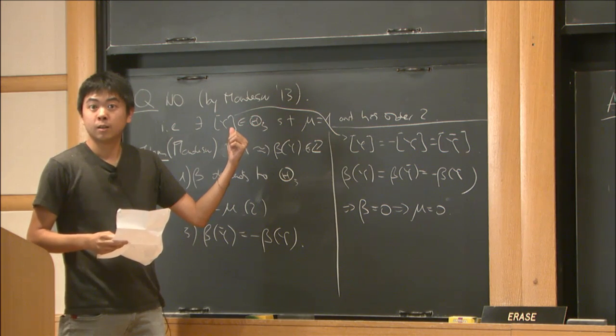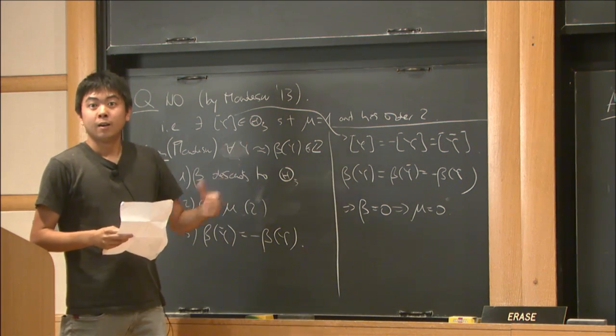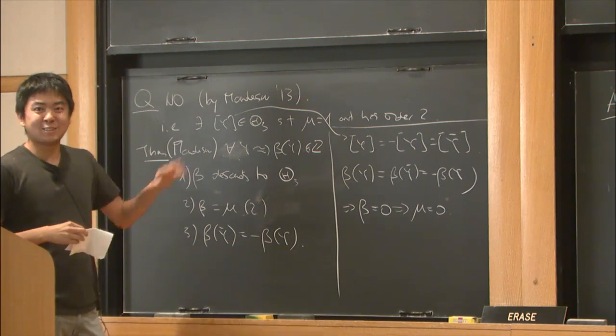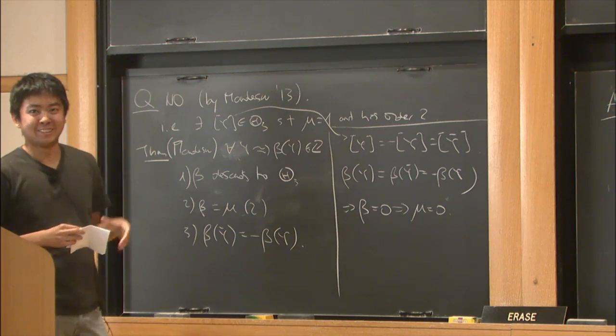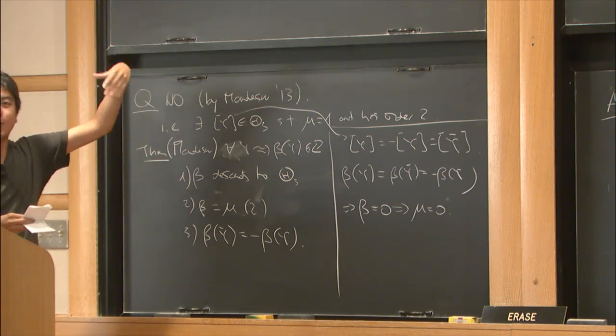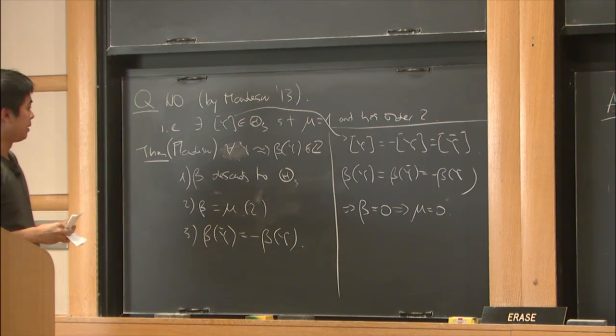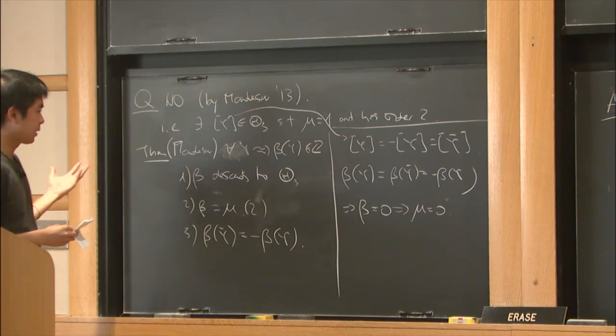Does this provide a manifold that's not triangulable? It's very convoluted. If you have an example, then you can go in higher dimensions. But there are examples, yeah.